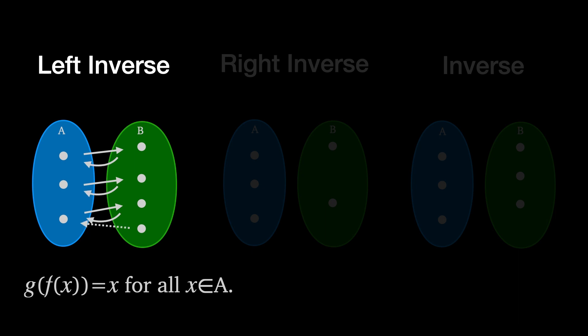There might be other elements in B outside of the image of f, but we don't need to worry about where they're mapped to. Also, notice that f must be injective in order for there to exist a left inverse.